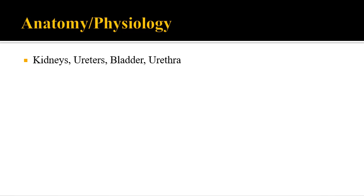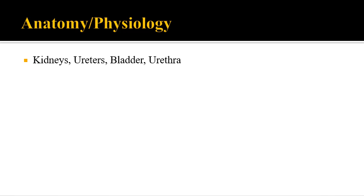The kidneys also remove excessive water. What essentially gets produced is urine, which is a substance that contains water, protein metabolism byproducts, and salt. You could also find small amounts of glucose, crystallized salts, and mucus. There are things it shouldn't contain — in particular, there shouldn't be any blood cells or whole proteins, and you wouldn't have large amounts of glucose in the urine.